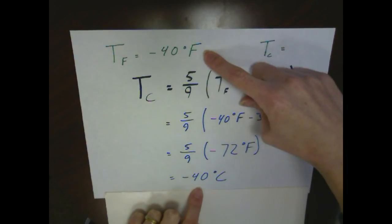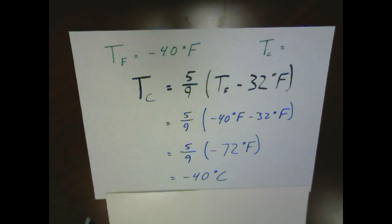Nope, that's not a mistake. Minus 40 Fahrenheit and minus 40 Celsius are actually the same temperature. If you were to look at a thermometer that goes that cold, you'd see that the numbers are actually aligned at that point.